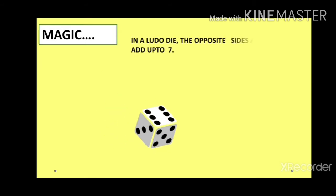It's magic! Now let's see what's the magic behind the Ludo die. Actually, in a Ludo die, the opposite sides always add up to 7.